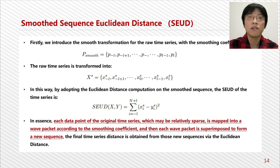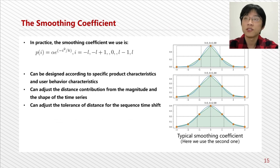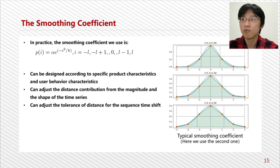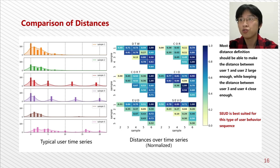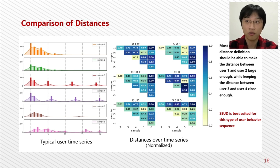Here is the distance definition we proposed. We call it Smooth Sequence Euclidean Distance (SEUD), calculated like the Euclidean distance but with a smooth transformation applied to the two raw time series first. The idea is not complex, but when put into practice it turns out to be very useful. Another advantage of SEUD is that the smooth coefficient can be designed according to the product and user behavior characteristics. The distance results show that SEUD is best suited to make the distance between user 1 and user 2 large enough while keeping the distance between user 3 and user 4 close enough.